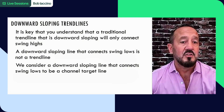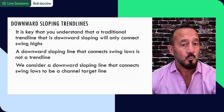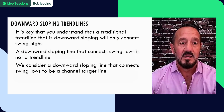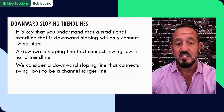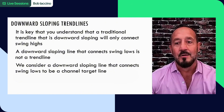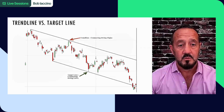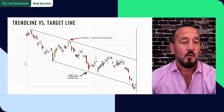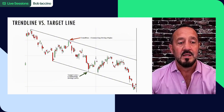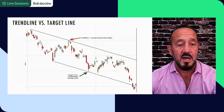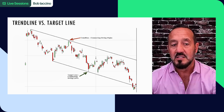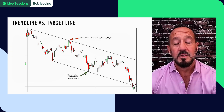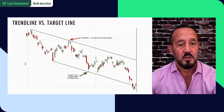Downward sloping trend lines. It's key that you understand that a traditional trend line that is downward sloping will only connect swing highs. A downward sloping line that connects swing lows is not a trend line. We consider a downward sloping line that connects swing lows to be a channel target line. You've got a downward sloping line connecting swing highs, and then you've got a downward sloping line connecting swing lows - that is a target line.